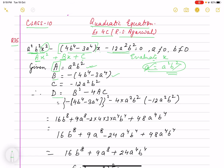How do we find the discriminant? The formula is D = b² - 4ac. We put the values: b is -(4b⁴ - 3a⁴), so D = [-(4b⁴ - 3a⁴)]² - 4(a²b²)(-12a²b²).